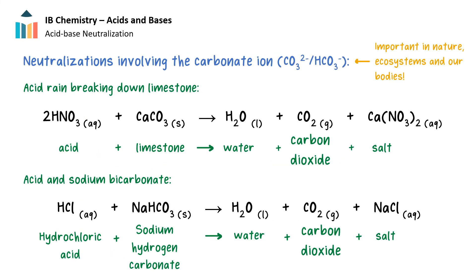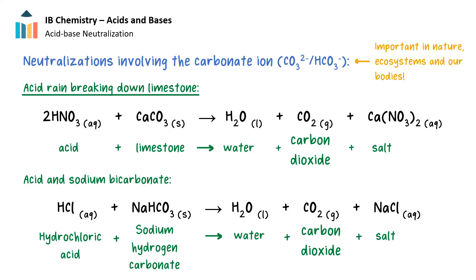One final type of acid-base neutralization reaction involves the carbonate ion and the hydrogen carbonate ion. Overall, the reactions of carbonates with acids play a vital role in the Earth's natural processes, including the carbon cycle, geology, climate regulation, the health of aquatic ecosystems, and even our own biology. Therefore, understanding these reactions and their implications is essential for scientists and policy makers regarding conservation and management of natural resources, as well as for understanding our health and well-being. Acid rain can break down limestone-containing structures, as well as inhibit shell formation in animals such as mollusks. In this reaction, the amount of limestone is reduced as nitric acid from acid rain neutralizes the limestone, which creates water, carbon dioxide, and a salt.